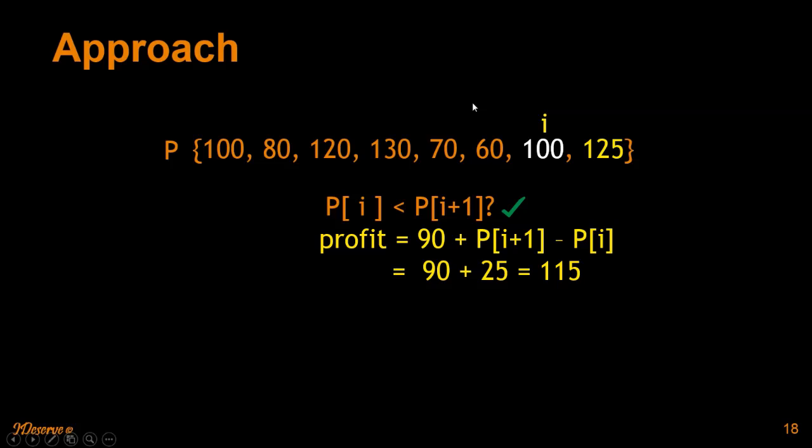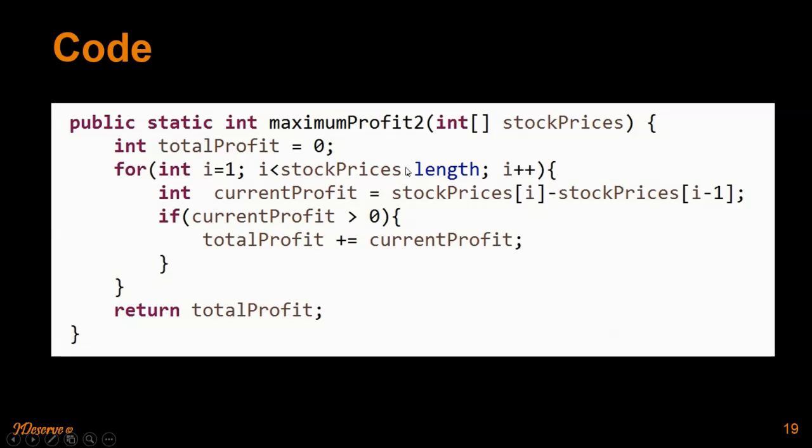Let's quickly go through the code. Code is pretty simple. What you do is get the stock prices array and iterate it one by one. Compute the profit that you would get by selling on the next day and buying on the current day. If the profit is greater than zero, you add it to the total profit. That's it. That is the solution.